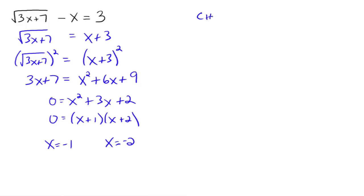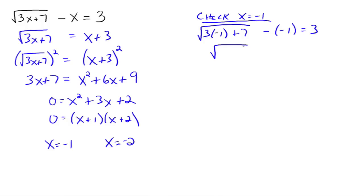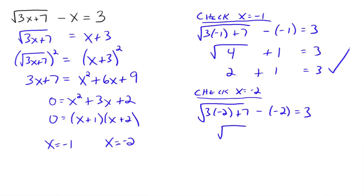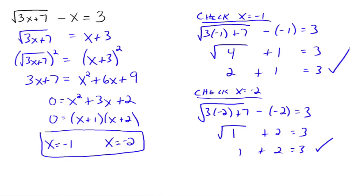Go back and check. Check x equals negative 1: you get the square root of negative 3 plus 7, which is 4, plus 1 equals 3. Square root of 4 is 2. 2 plus 1 does indeed equal 3. Check. Now check x equals negative 2: you get the square root of negative 6 plus 7, that's 1. 1 plus 2 equals 3. The square root of 1 is 1. 1 plus 2 is indeed equal to 3. So it checks. Both of them are solutions to your original equation.